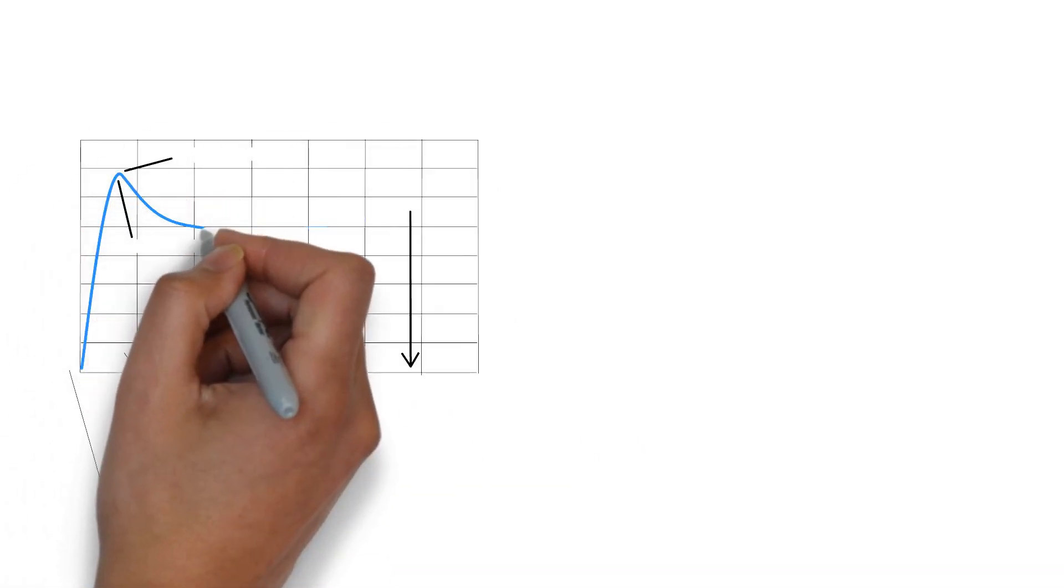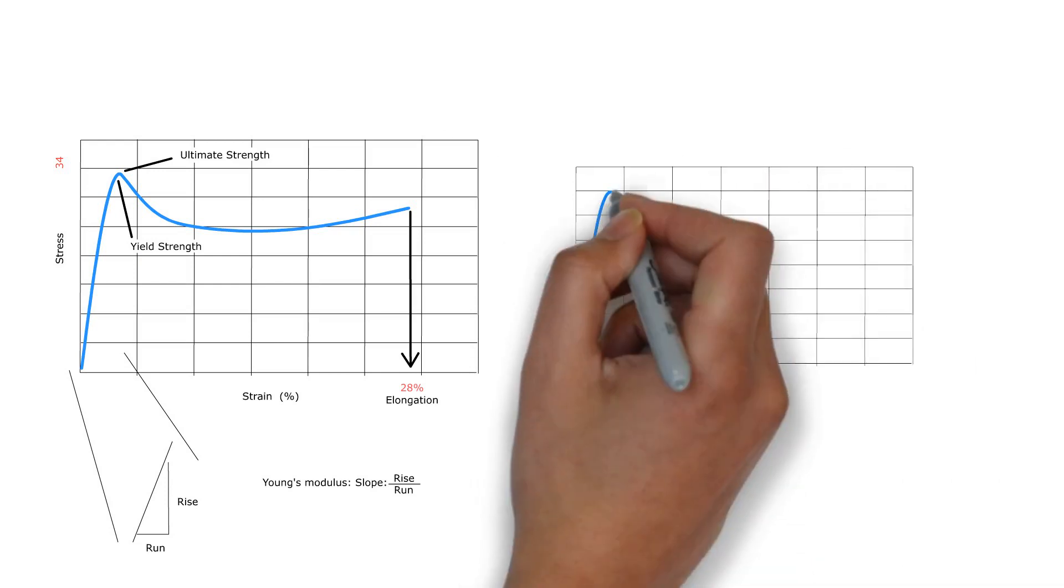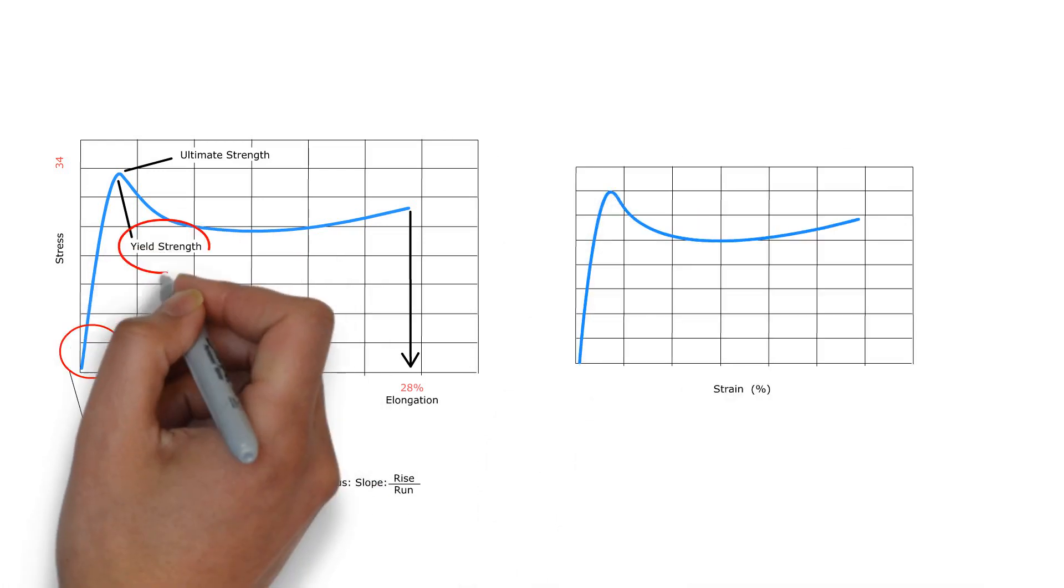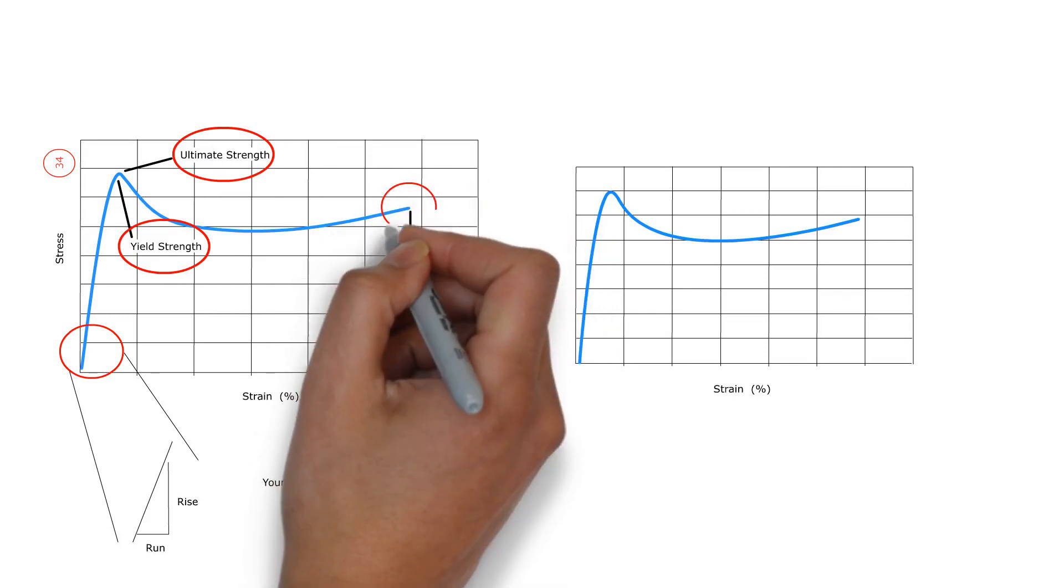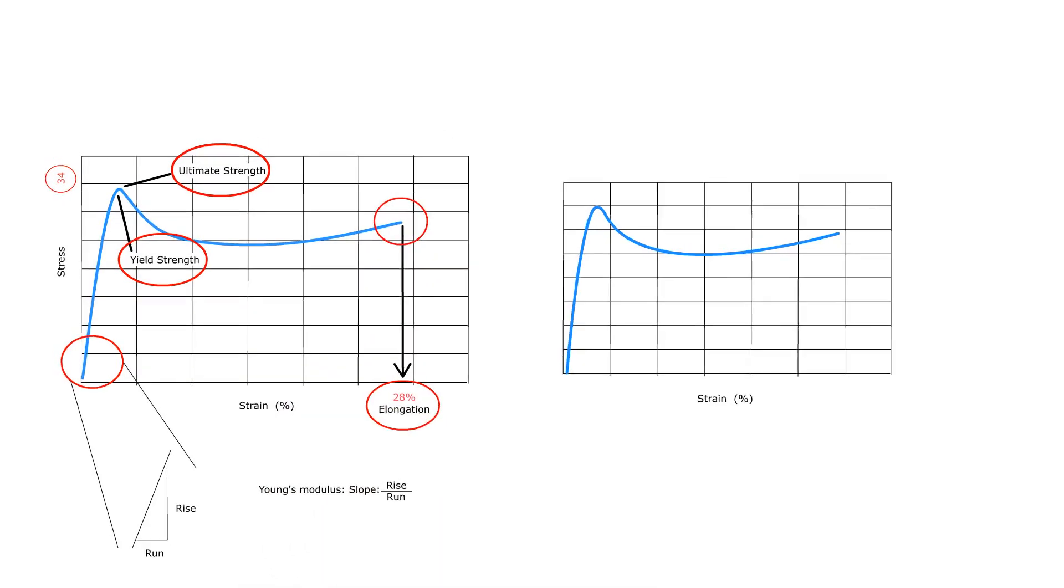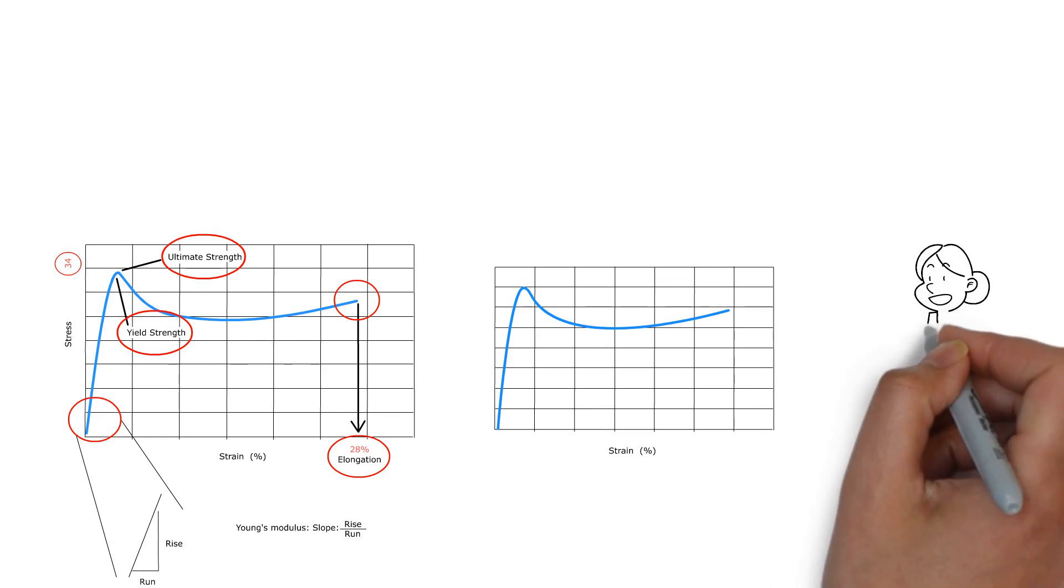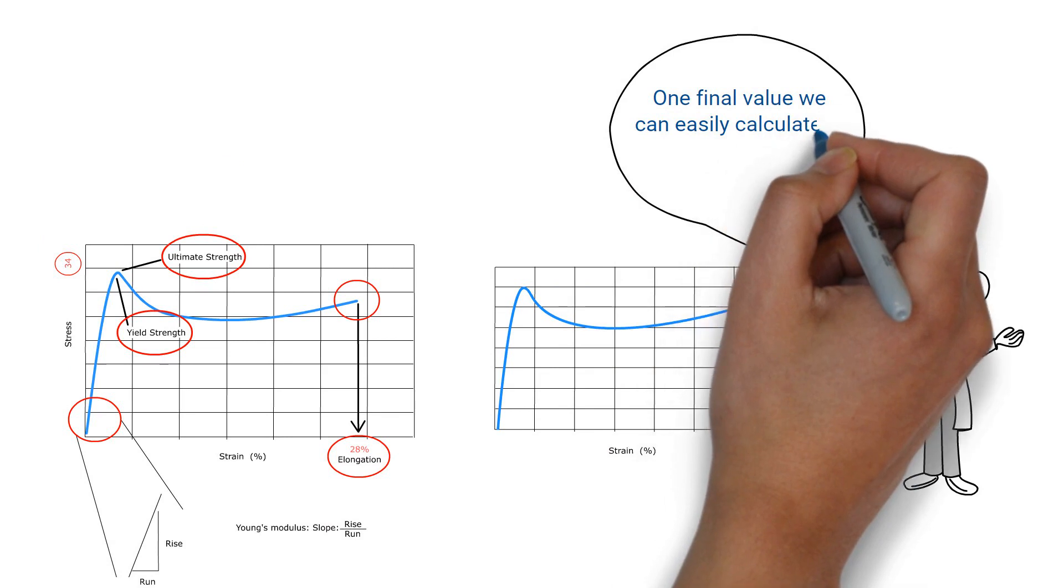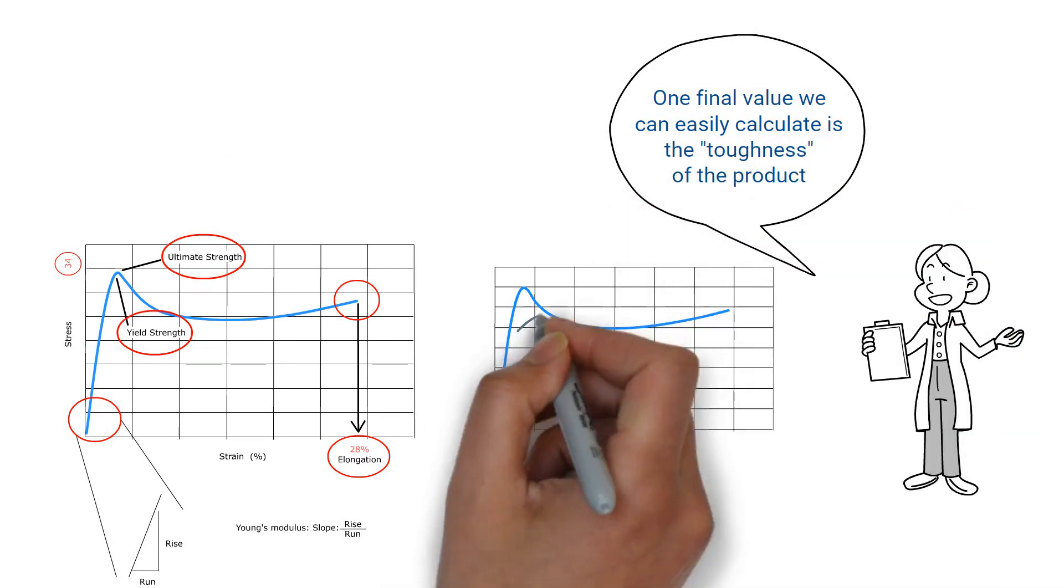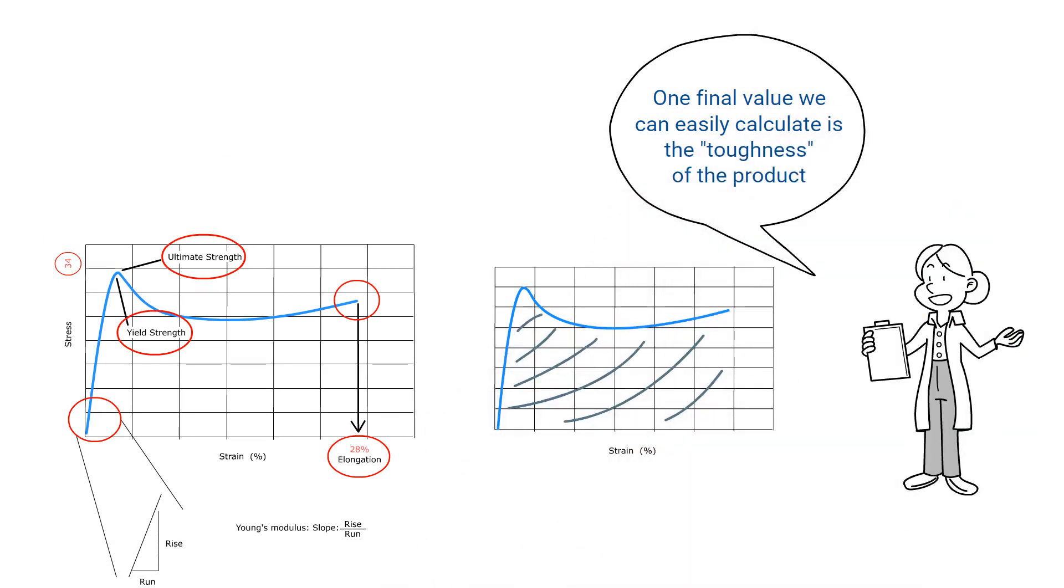From the different curves, we can then calculate various parameters. The E modulus is here, the yield strength and ultimate strength here and here. We can also calculate the elongation, how much the product has stretched, as this is the strain at the fracture, expressed as a percentage. One final value we can easily calculate is the toughness of the product. This is simply the area under the curve.